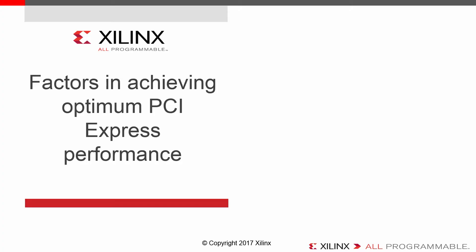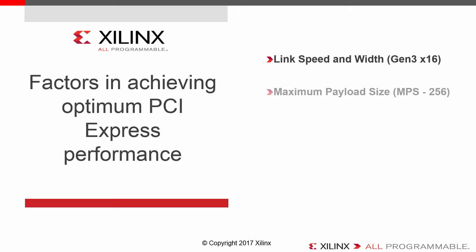The first thing we want to look at is what are the factors in achieving optimum PCI Express performance. The first thing is to make sure we select a link speed and link width appropriate for our design. The maximum Xilinx supports is Gen 3x16, but today we're looking at a Gen 3x8 design. Next is maximum payload size, which is determined by the smallest maximum payload size the system can support. While the Xilinx IP supports 1024 bytes, most systems today support 128 or 256 bytes.